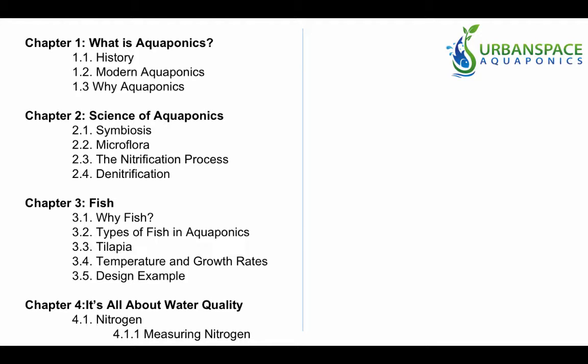Chapter 3 is dedicated to the fish component in aquaponics, starting with why fish is a better alternative, types of fish used in aquaponics, details about tilapia, water temperature and how it affects growth rates, and finally ending the chapter with a design example.